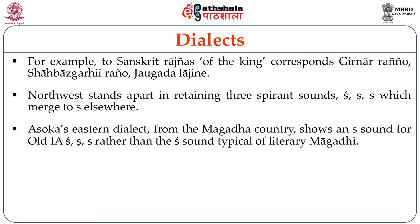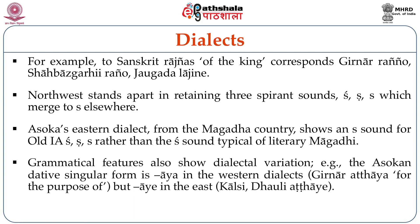Moreover, in the East dialect areas there is a tendency to insert a vowel within consonant clusters, while in the West and Northwest one of the consonants is assimilated without an intervening vowel. For example, Sanskrit rajnees (of the king) corresponds to Girnar ranyo, Shahbazgarhi ranyo without gemination, Javgada lajine. Northwest stands apart in retaining three spirant sounds which merge to SA elsewhere. Ashoka's Eastern dialect shows an SA sound for Old Indo-Aryan SA/SHA/SHA rather than the SHA sound typical of literary Maghadi, i.e., an alveolar rather than a palatal sound.